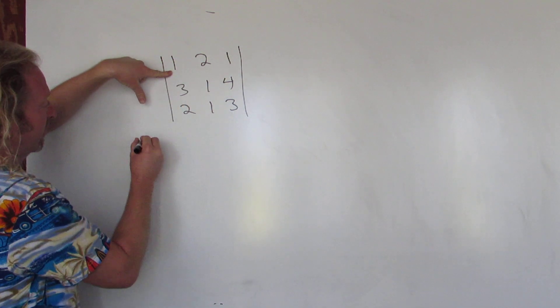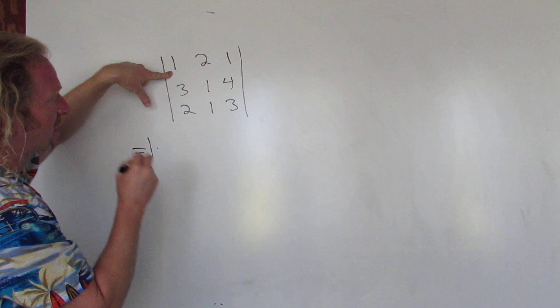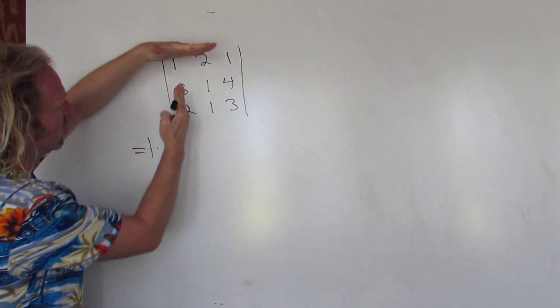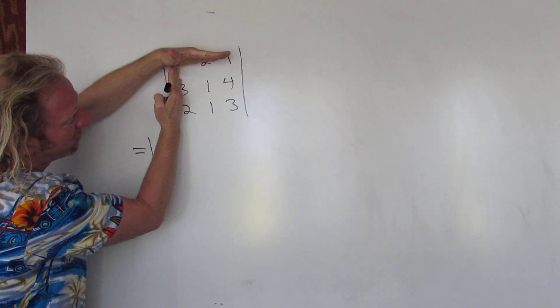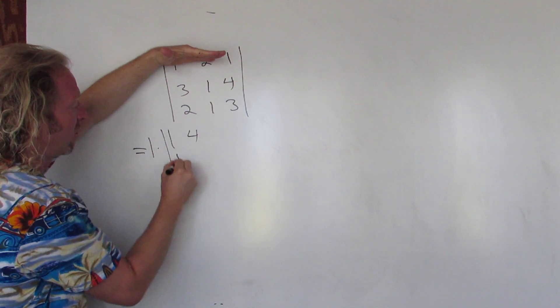So let's just take this number here, 1, and then it's always plus, minus, plus. So plus, then you cross out the corresponding row and column: 1, 4, 1, 3, 1, 4, 1, 3. Boom, 1, 4, 1, 3.